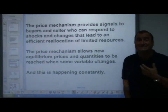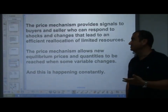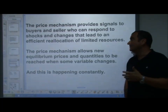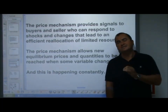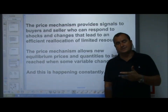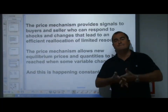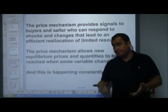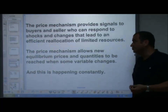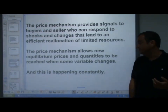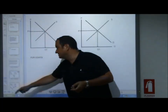The price mechanism provides signals to buyers and sellers who can respond to shocks and changes that lead to an efficient reallocation of limited resources. When demand or supply changes, it is the market mechanism that alerts demanders and suppliers of what's changed and leads the market to the new best allocation of resources — it might be more, it might be less. The price mechanism allows new equilibrium prices and quantities to be reached when some variable changes, and it's happening constantly. Let's look at one simple example.